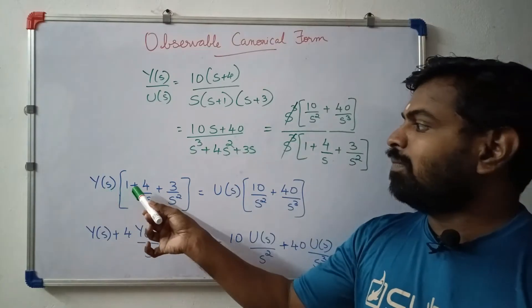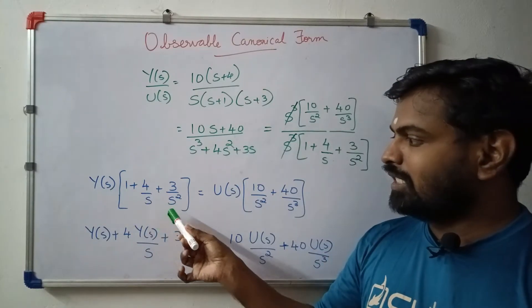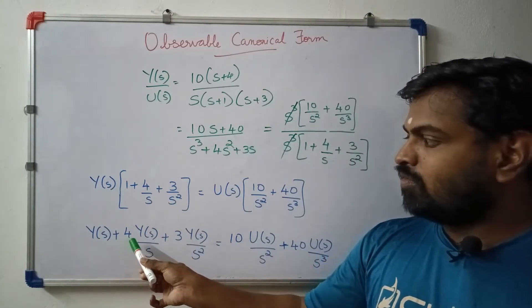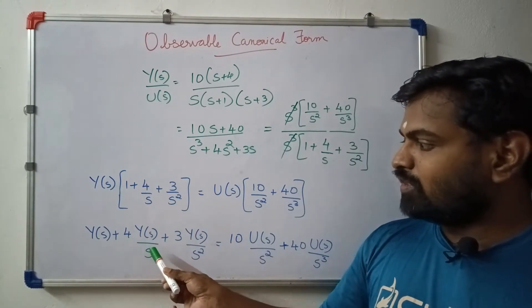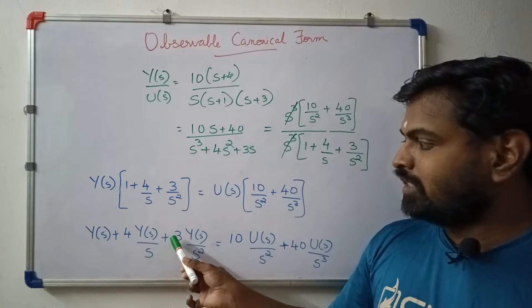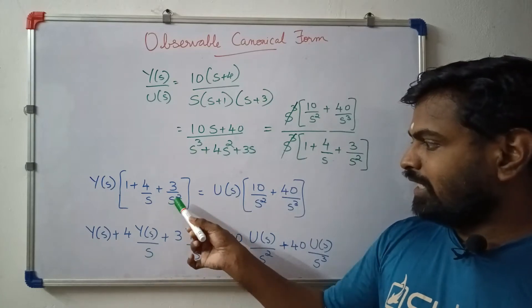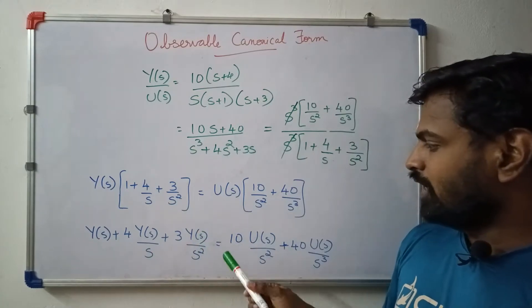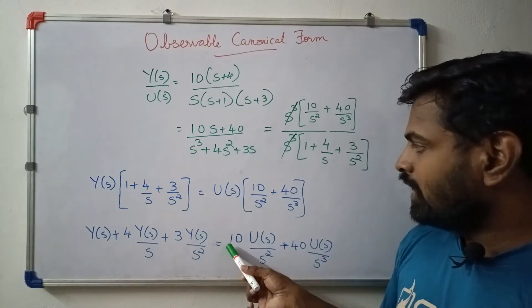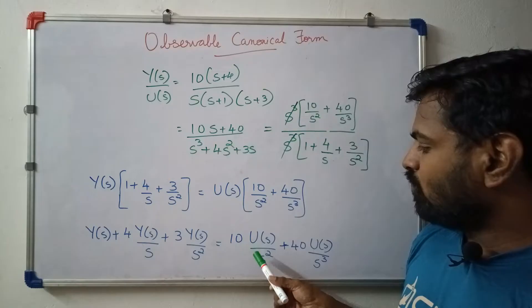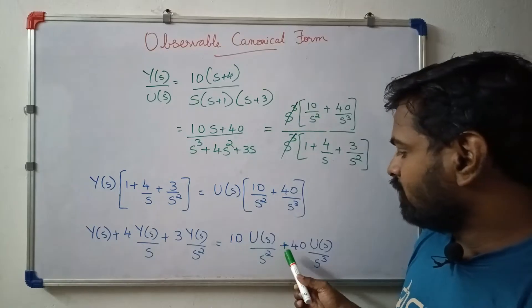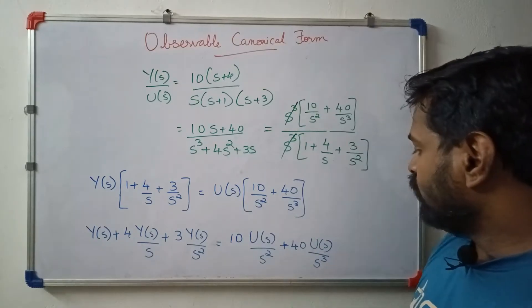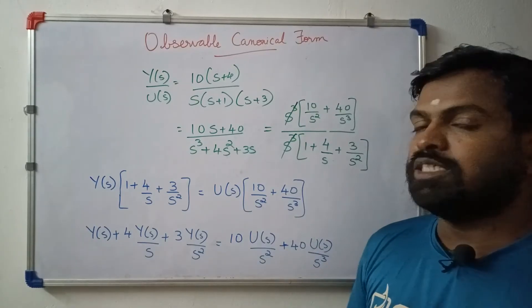Now let's multiply through: Y(s) plus 4 Y(s) over s plus 3 Y(s) over s squared equals 10 U(s) over s squared plus 40 U(s) over s cubed.